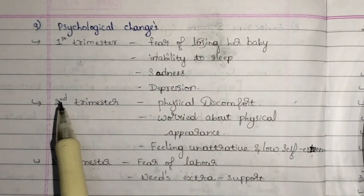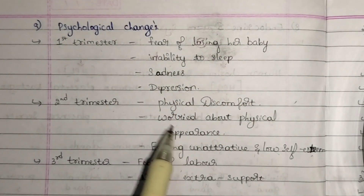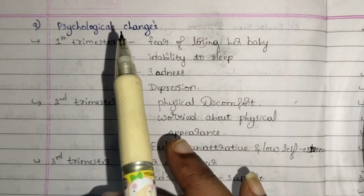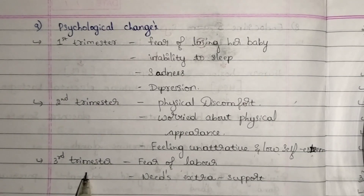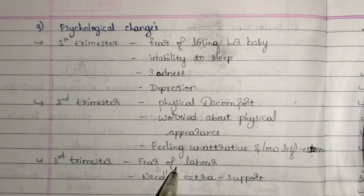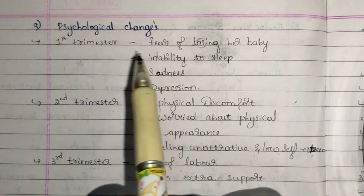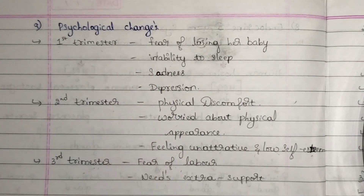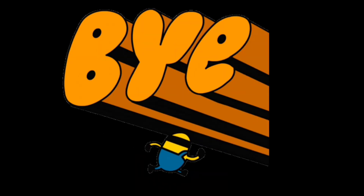So in summary: in the first trimester there is a fear of losing the baby, in the second trimester there is a fear of feeling unattractive, and in the third trimester there is the fear of labor. These are the psychological changes seen in pregnant women. Questions will be provided at the end of the chapter — until then, stay tuned and see you in the next video.